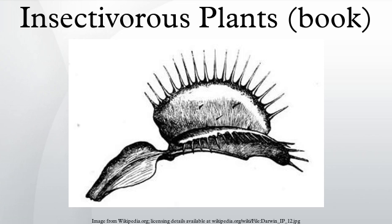Darwin knew that these plants flourish in nitrogen-limited environments, growing in bogs, poor peaty soil and moss. Most plants receive nutrients from the soil by their roots, but these plants have poor root systems and have adapted to receive nutrients from captured insects. Darwin also noted that Drosera and other carnivorous plants feed on seeds, thus also making them vegetable feeders.